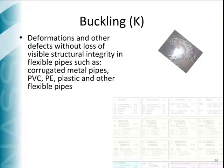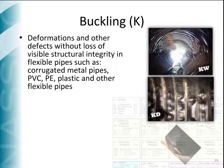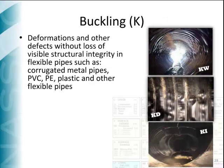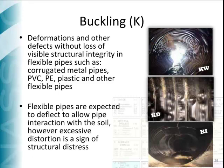Buckling is a newly added structural defect group in PACP. It refers to deformations and other defects without loss of visible structural integrity in flexible pipes, such as corrugated metal pipe, PVC, polyethylene or PE, plastic, and other flexible pipes. Under normal circumstances, flexible pipes are expected to deflect, allowing interaction with the soil. However, excessive deflection and other surface damages on flexible pipes are signs of structural distress. On the right side of this slide, you're looking at three different types of buckling defects in PACP: KW or buckling wall, KD buckling dimpling, and KI or buckling inverse curvature.